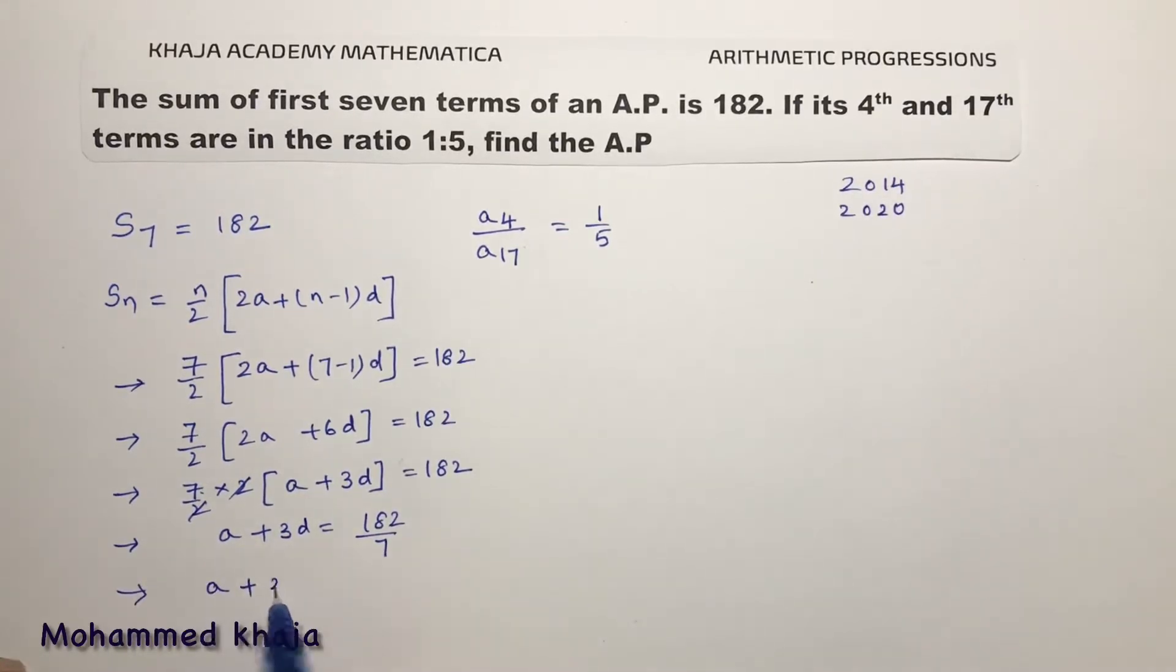So A plus 3D equals, if you will cancel, 7 times 1, 7 times 2 is 14, so 42, 7 times 6, so 26. A plus 3D is 26. Leave it here. Now here see A4 and A17.